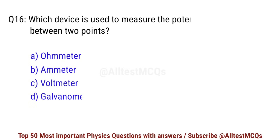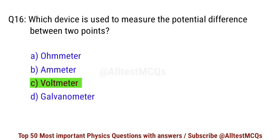Question No. 16. Which device is used to measure the potential difference between two points? Right option is C. Voltmeter.